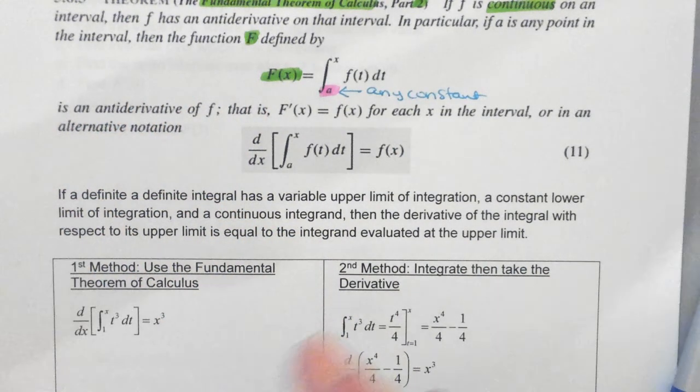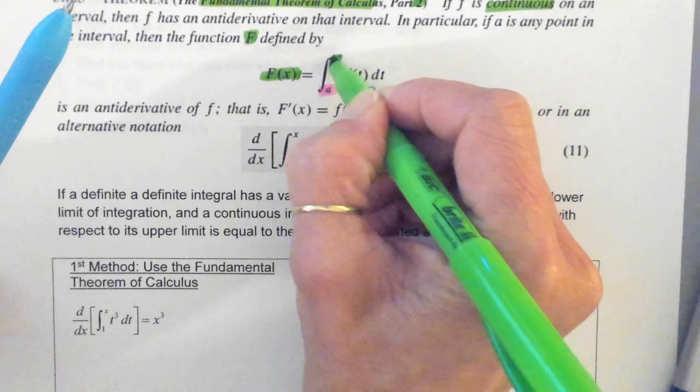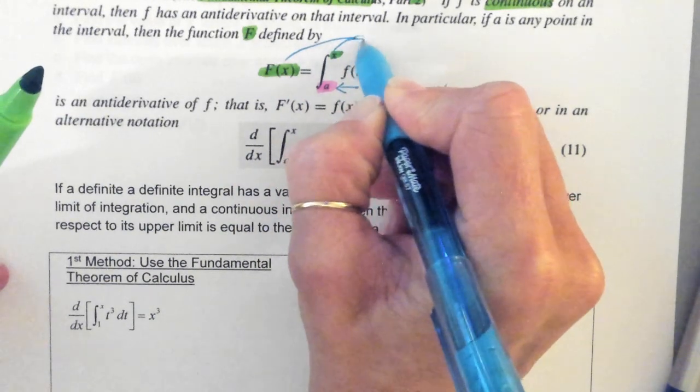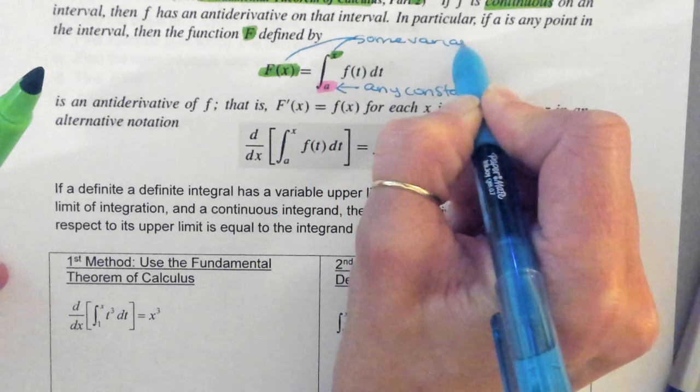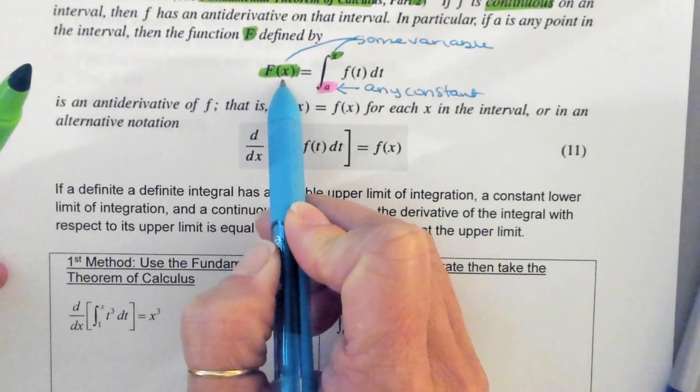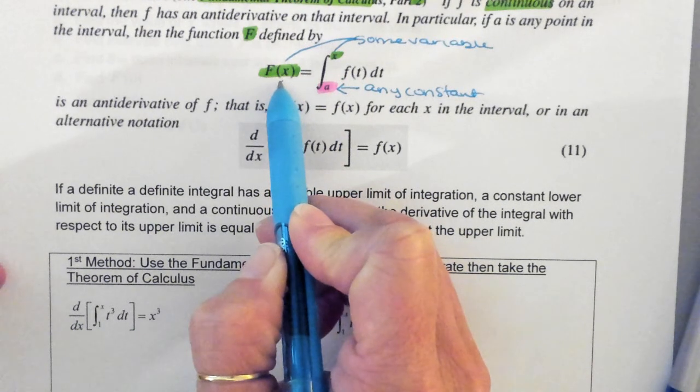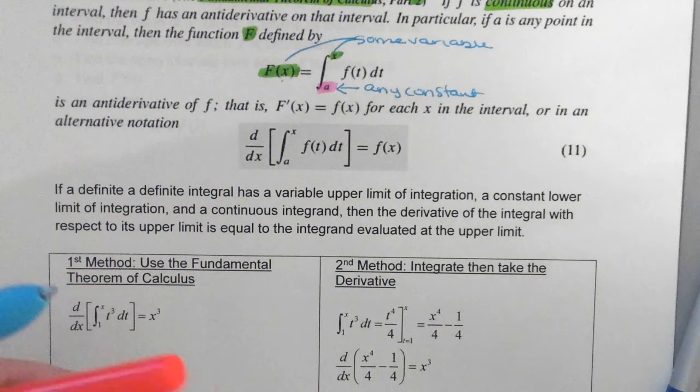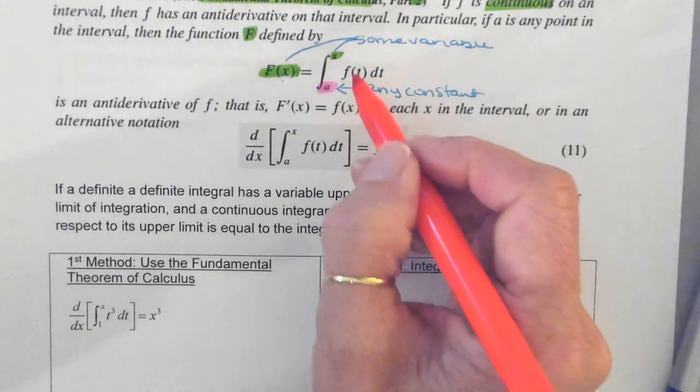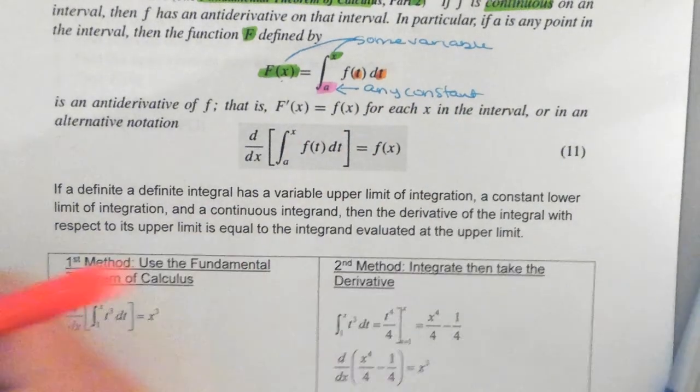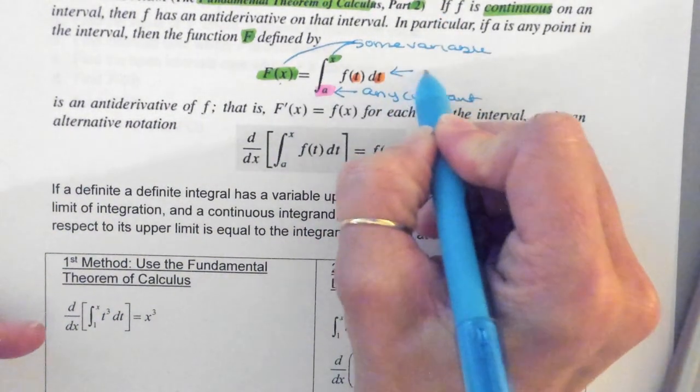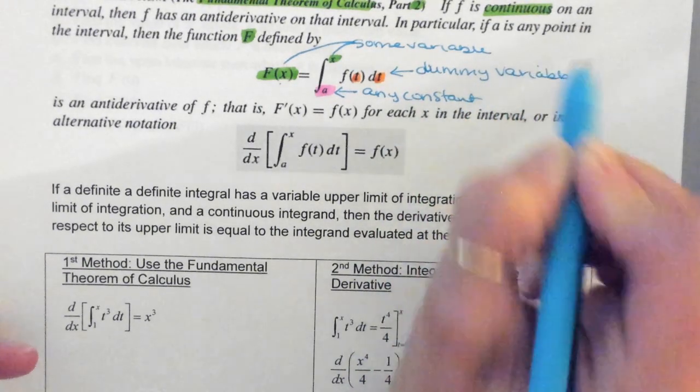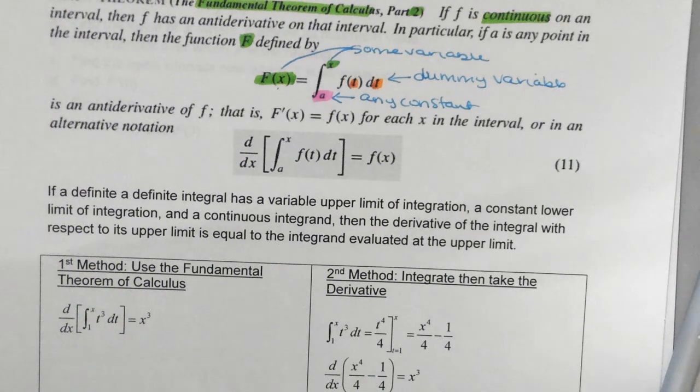And then, this right here is some variable, but what you have to remember is these variables have to be the same. So see this, if this is an x, this is an x. If this is a j, what does this have to be? A j. Typically it's an x. Now, they chose t, just like we chose u for u sub, so this right here, t dt, is considered what they say is a dummy variable. So it is just a random, but they stick with t. So f of t dt.